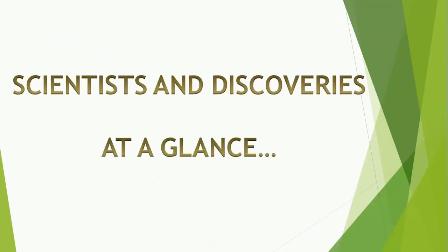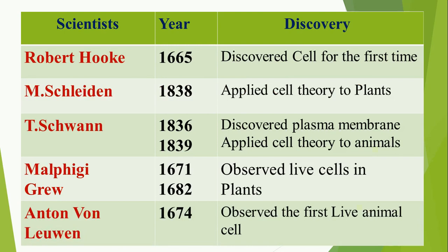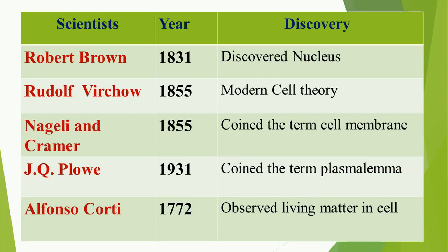Let's get started — scientists and discoveries at a glance, all scientists involved in cell biology. Robert Hooke in 1665 discovered the cell for the first time — this is how the cell biology world started. Schleiden in 1838 applied cell theory to plants; Schwann in 1839 applied cell theory to animals and also discovered the plasma membrane in 1836. Malpighi and Grew in 1671 and 1682 respectively observed live cells in plants. Antonie van Leeuwenhoek in 1674 observed the first living animal cell. Robert Brown discovered the nucleus in 1831, and cell theory was modified by Rudolf Virchow in 1855, who proposed the modern cell theory.